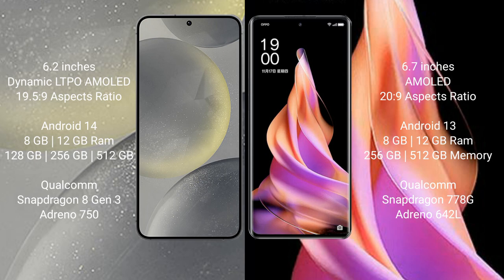Samsung Galaxy S24 comes with 8GB and 12GB RAM options, with 128GB and 256GB internal storage. It is powered by a Qualcomm Snapdragon 8 Gen 3 processor, with GPU Adreno 750.